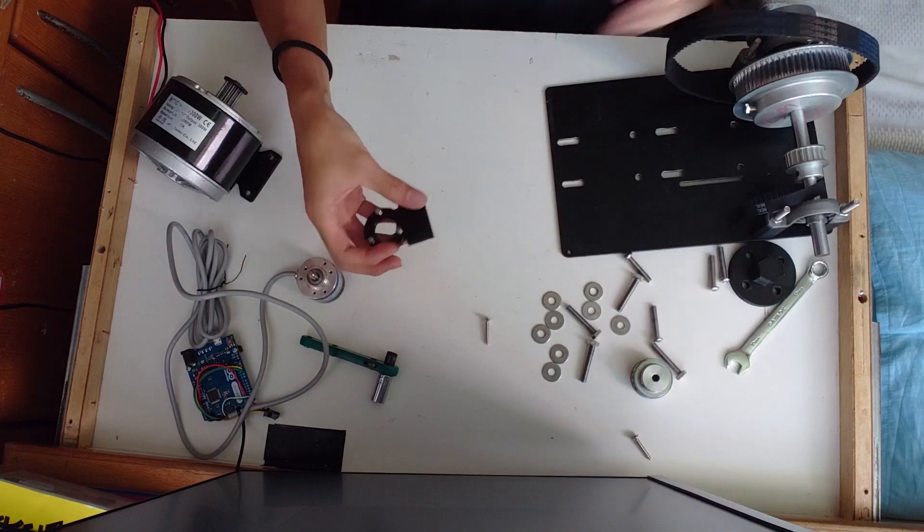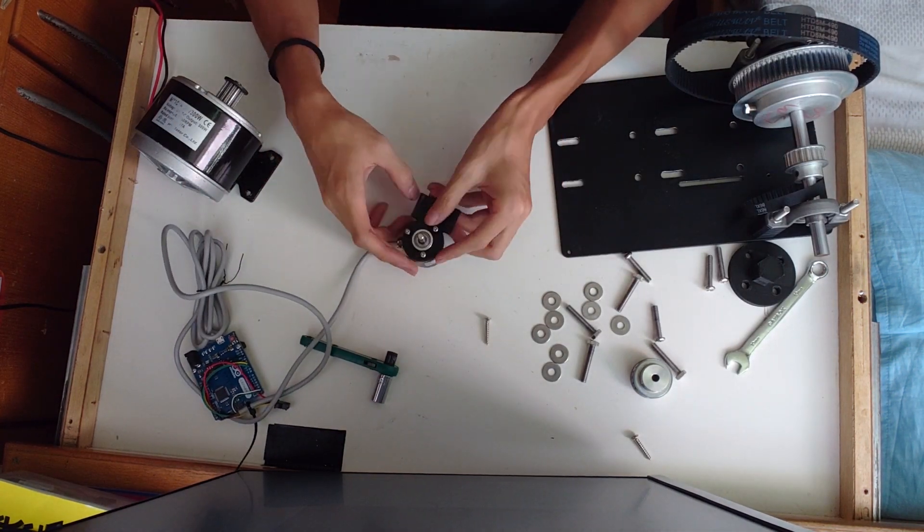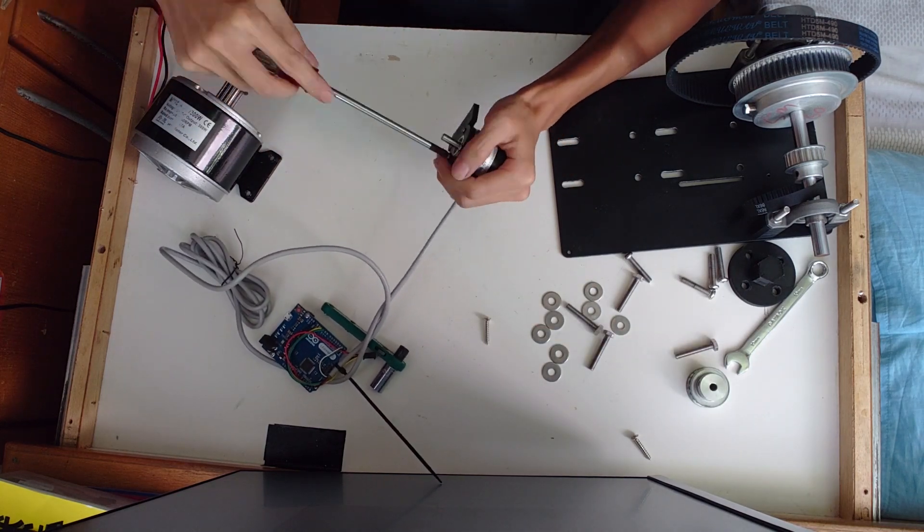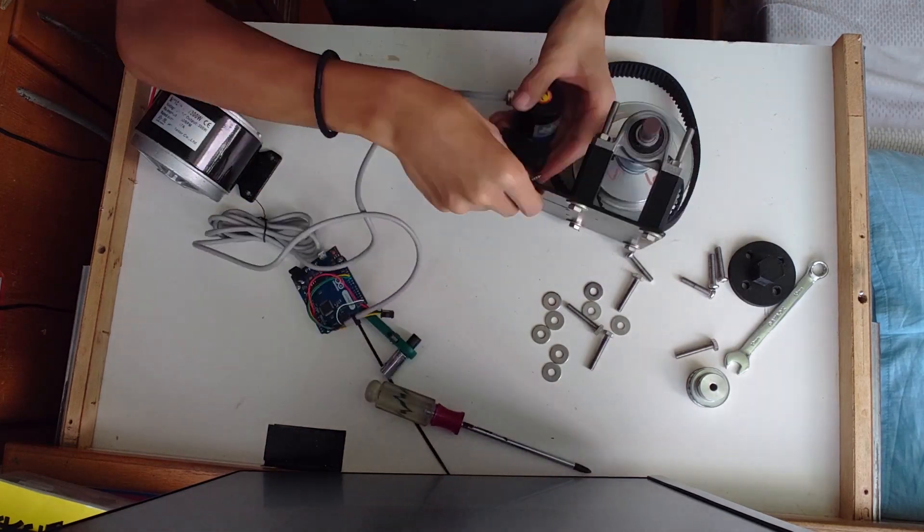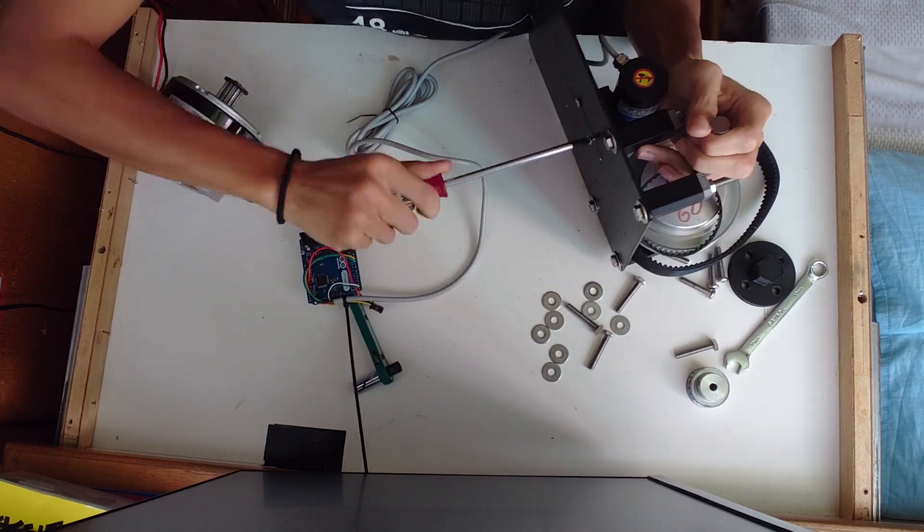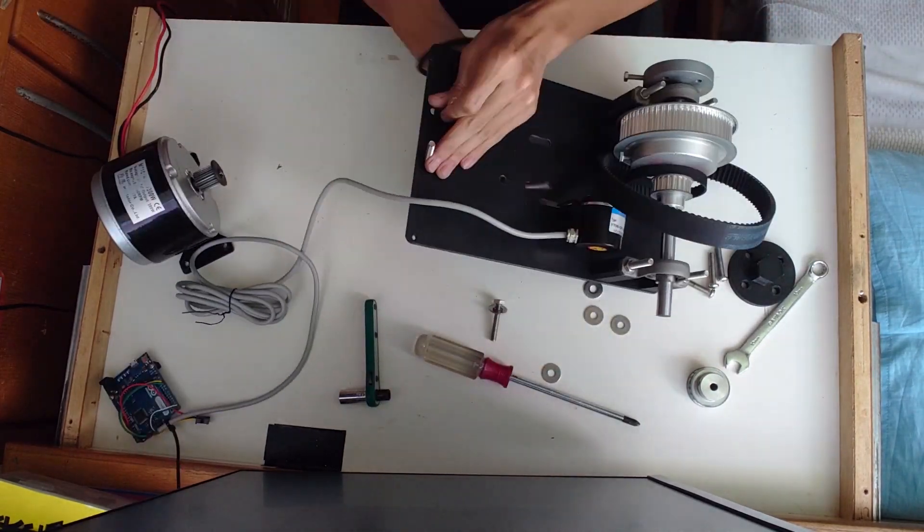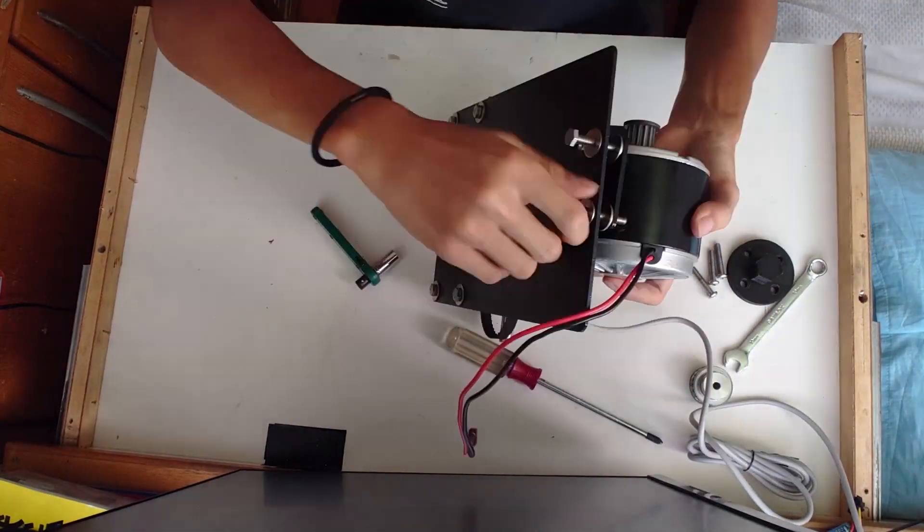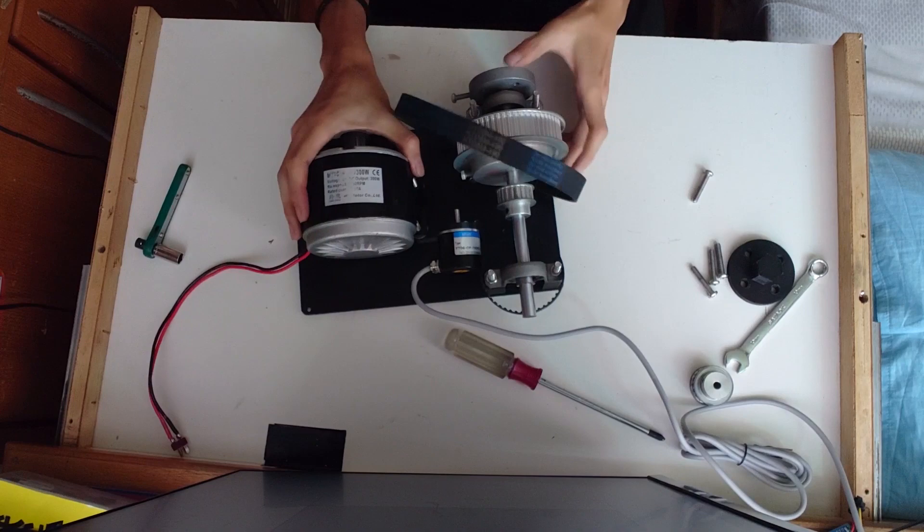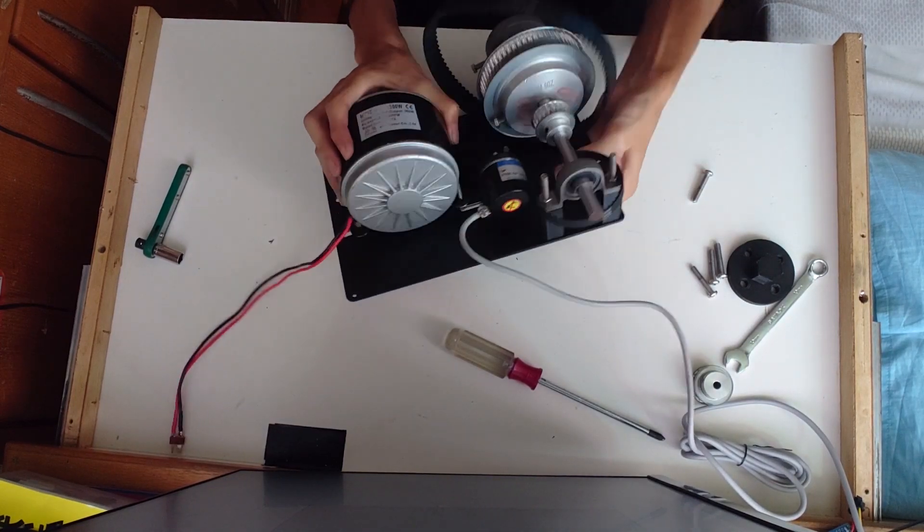Then put the 3D printed mount onto the encoder and mount the encoder to the base. Then use the M6 screws to mount the motor in place. The motor should slide to adjust the tension of the belt.